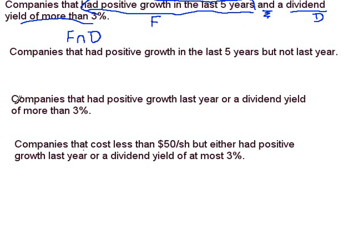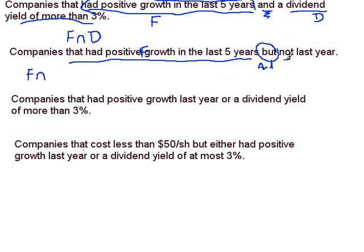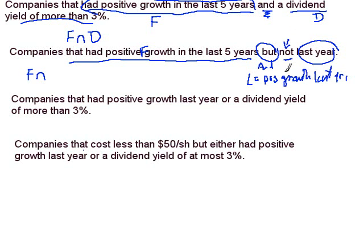Let's look at the second criteria: positive growth in the last five years — that's F — but not last year. The 'but' is just another way of saying 'and', so we can intersect there. 'Not' is another connective. Not last year means they did not have positive growth last year. Let's designate L as the set of companies that had positive growth last year. We're interested in not that set, so this would be F intersect L-prime.